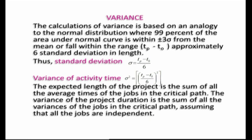The calculation of variance is based on an analogy to the normal distribution, where 99% of the area under the normal curve is within 3 sigma limits from the mean, or falls within the range t_p minus t_o — approximately 6 standard deviations in length. By this logic, the standard deviation sigma equals (t_p - t_o) / 6. Therefore, the variance of activity time, sigma squared, is: sigma² = ((t_p - t_o) / 6)².